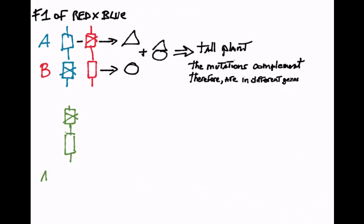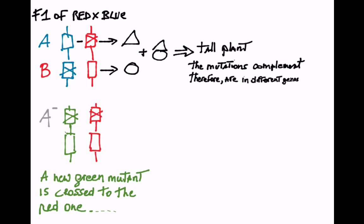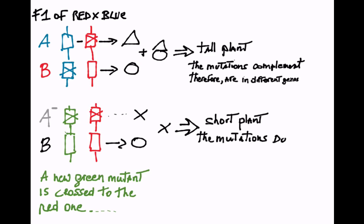We now get a new mutant, green, and we cross it to the red mutant. The hybrid makes the B protein but not the A protein. The complex is not formed and the resulting plant is short. The red and green mutants do not complement and thus are in the same gene.